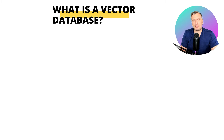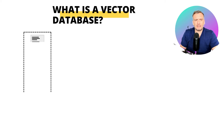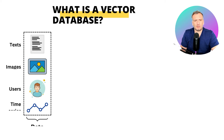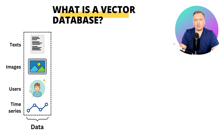What is a vector database? A vector database is used to store data in a vectorial representation. Let's say you have some data: text data, image data, user data, time series data.